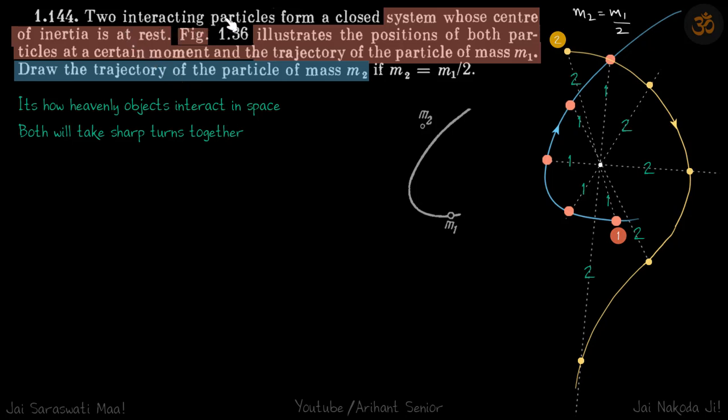We are given two interacting particles whose center of inertia is at rest. So we have two particles m1 and m2, and their center of mass somewhere is at rest. It's given that m2 is half m1, so that gives the position of center of mass, the initial position. Now we need to find the trajectory of particle m2.